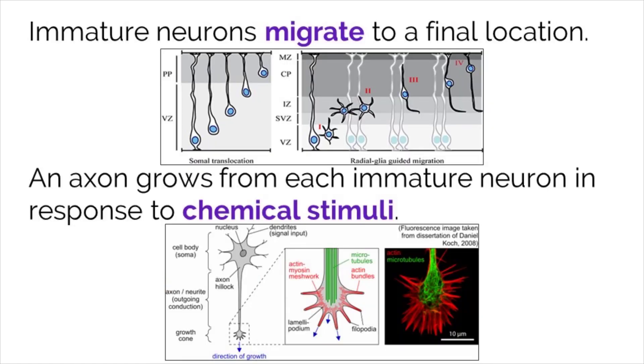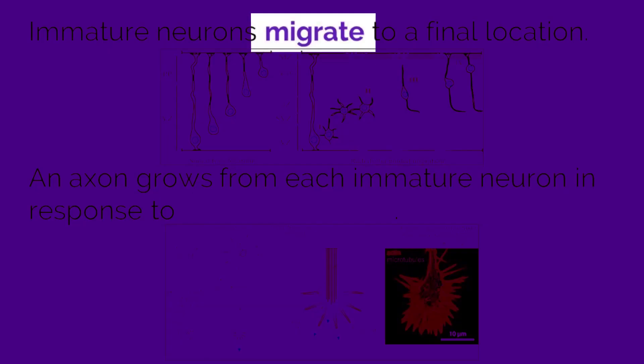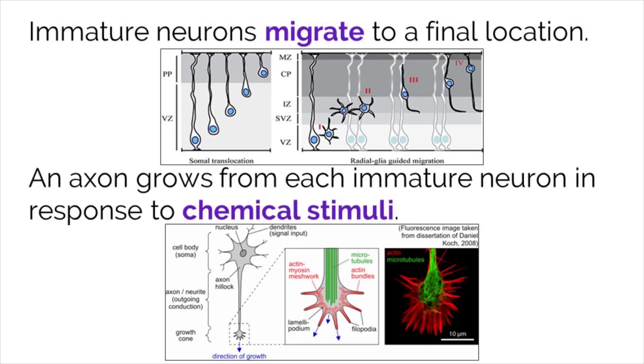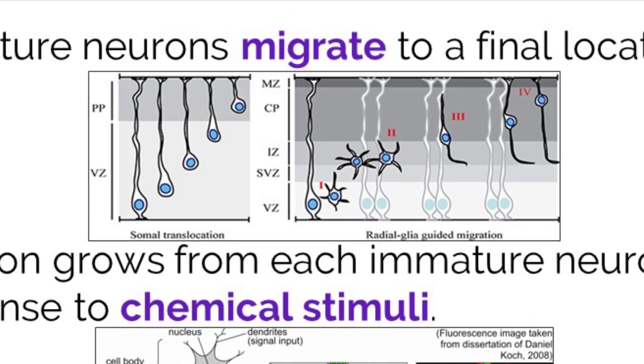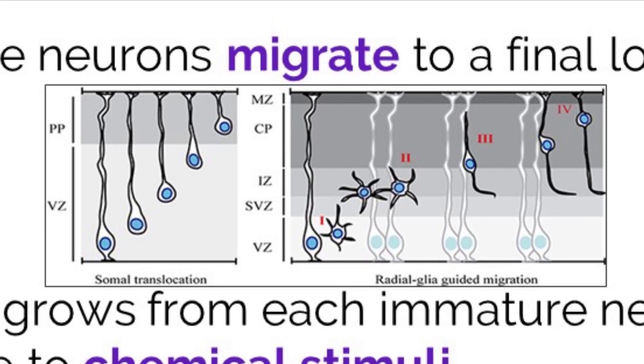As neurons are maturing, they migrate, or move, to find their final position to create the correct circuitry that the body needs. There are two different ways that neurons can reach their destination.